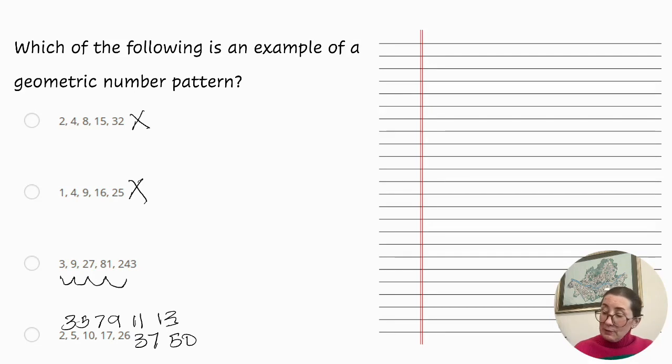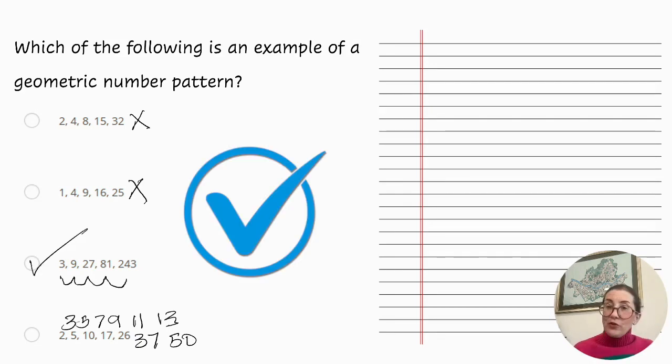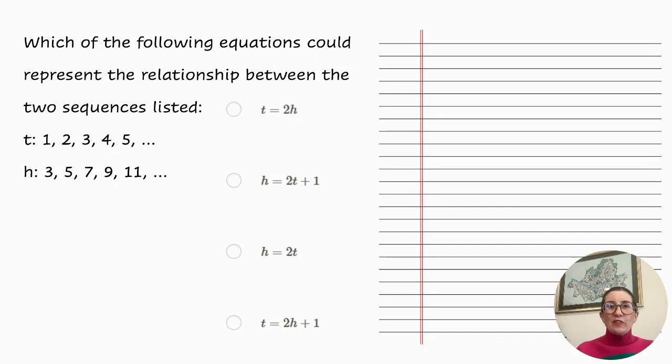So we can confidently complete the question with the correct answer. The third question. Which of the following equations could represent the relationship between the two sequences listed? T: 1, 2, 3, 4, 5, etc., H: 3, 5, 7, 9, 11, etc. Let's review the options.